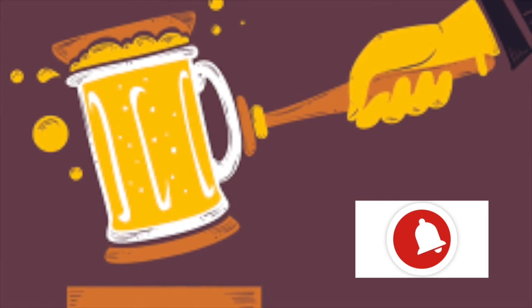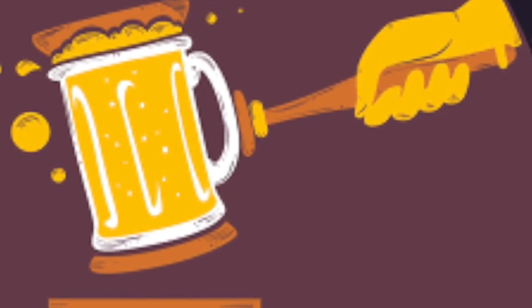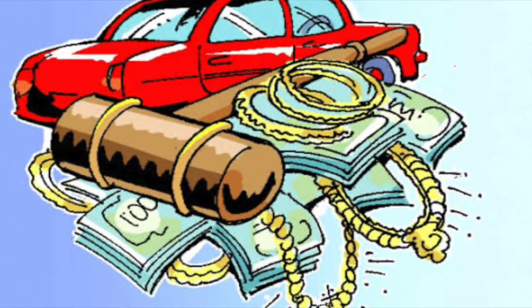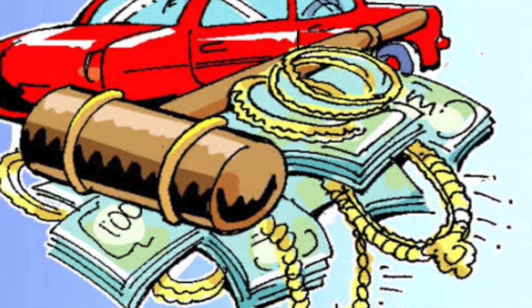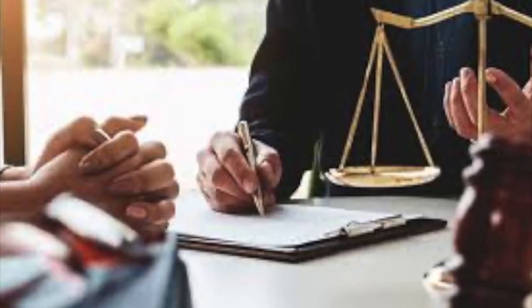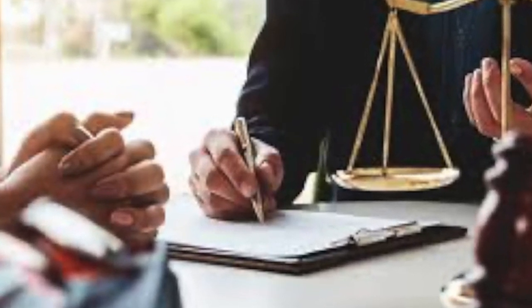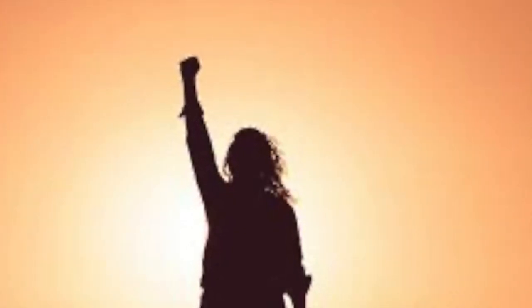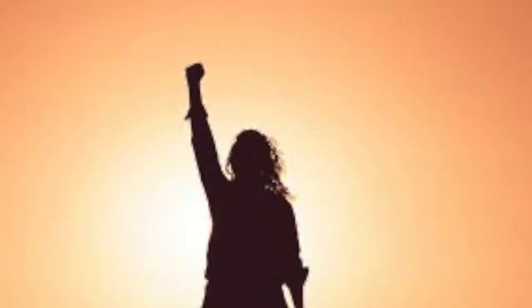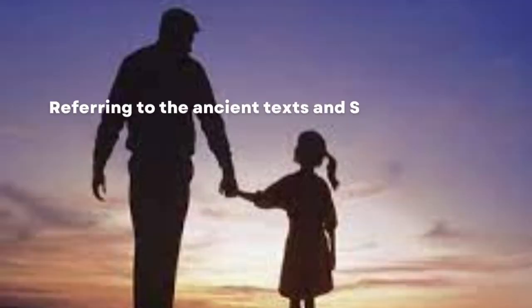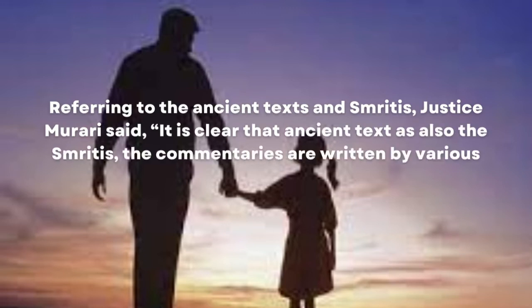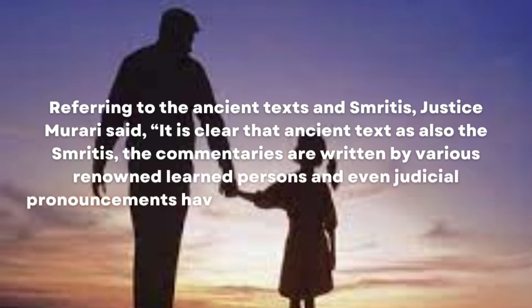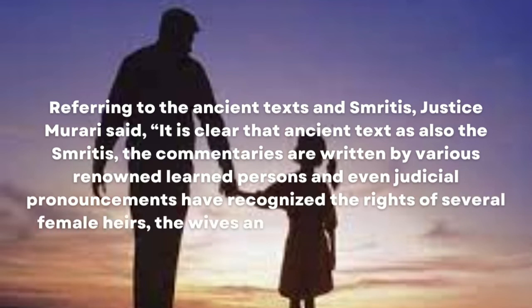Regarding the judgment of 21st January, it states that the self-acquired property of a person who died intestate in 1949 — intestate meaning without writing a will — would devolve on his sole daughter, despite the man living in a joint family, and could not pass to the deceased person's brother on the basis of the survivorship law in force prior to 1956. Referring to ancient texts and Smritis, Justice Murari said it is clear that ancient texts, commentaries by renowned learned persons, and judicial pronouncements have recognized the rights of several female heirs, with wives and daughters being foremost among them.